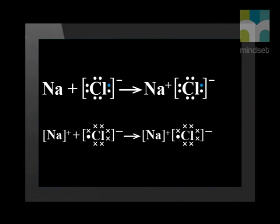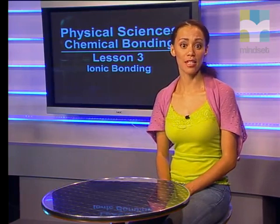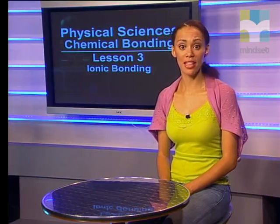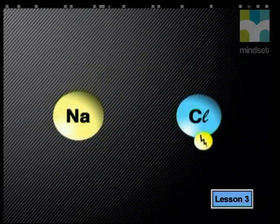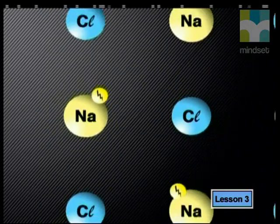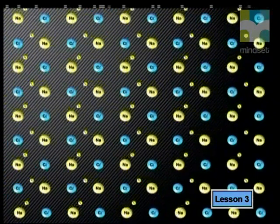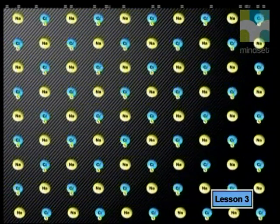Ionic compounds must be balanced — the sum of the positive and negative charges must be equal to zero. Anions and cations are held together by opposite charges. An ionic bond occurs between metal and non-metal atoms where transfer of electrons takes place, and the electrostatic force of attraction between the resulting oppositely charged ions holds the atoms together. The transfer of electrons does not take place between a single sodium atom and a single chlorine atom, but takes place between many billions of atoms, which join together in a very ordered giant lattice.